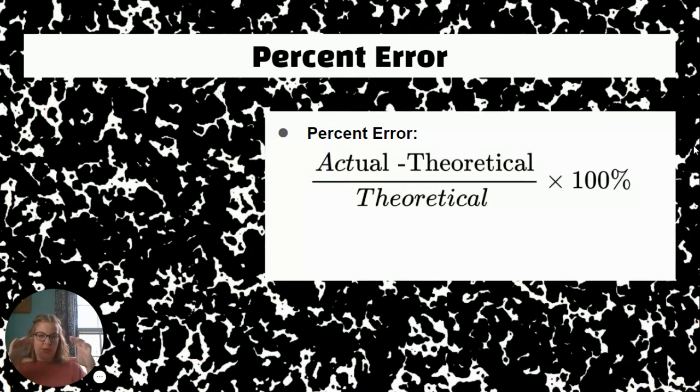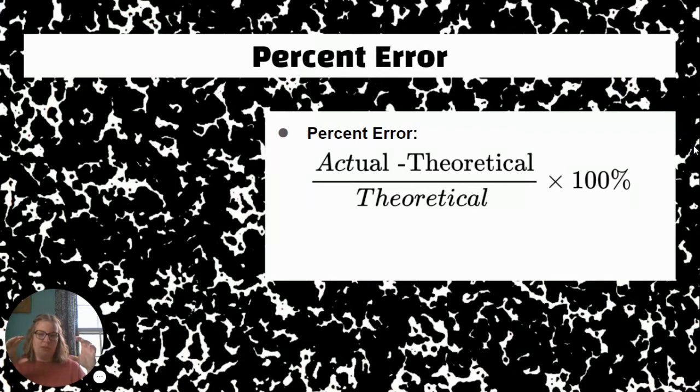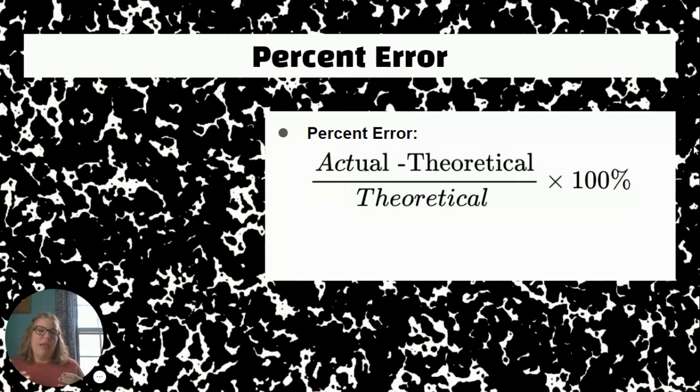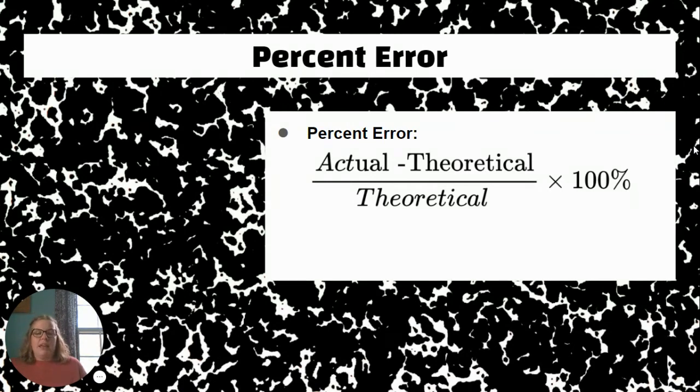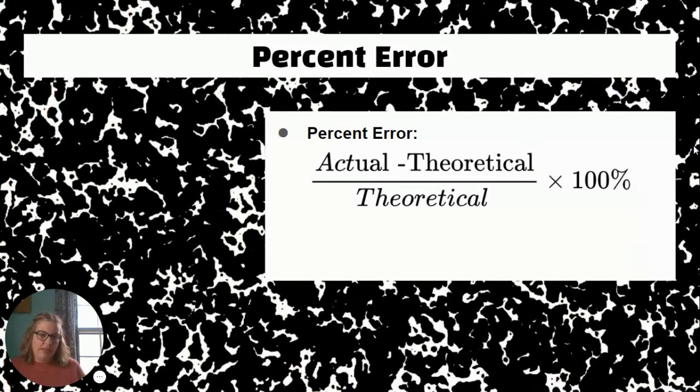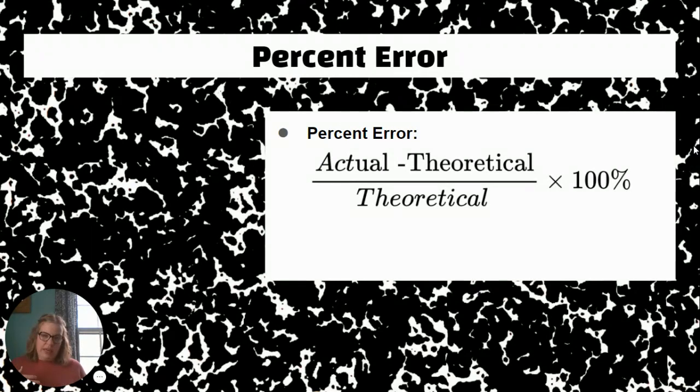The theoretical is going to be what it was supposed to be for your answer, and then you're going to subtract those first. So make sure that you kind of put those in parentheses when you are dealing with your calculation. You're going to take the difference between those two, and then you're going to divide it by the theoretical value again, and then multiply that by a hundred percent.